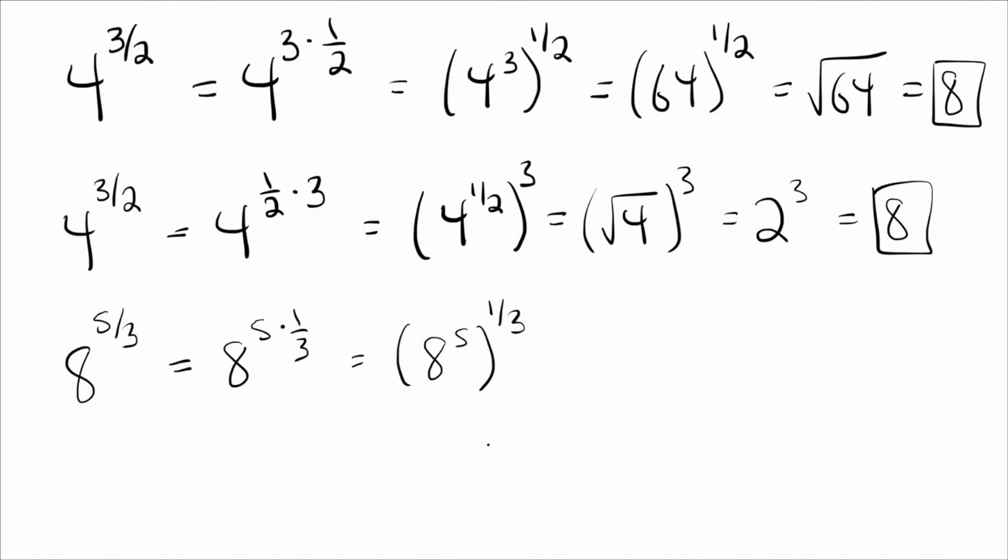So let's go back. And instead of doing 5 times 1 third, let's switch that and see if it's any better. Okay, so let's write this instead as 8 to the 1 third times 5. Of course, that's the same thing. That's still 5 thirds.